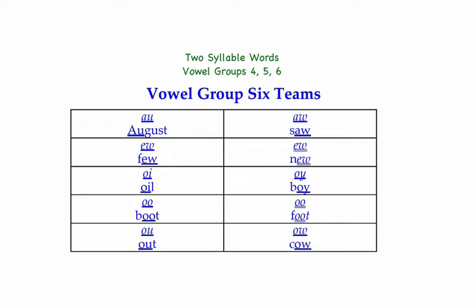This group of teams you have to memorize. A-U is 'aw' as in August. A-W is 'aw' as in Psalm. E-W with one line under it, the primary sound, is 'you' as in few. E-W with two lines under it represents the second sound, 'oo' as in new. O-I is 'oi' as in oil. O-Y is 'oi', same sound, as in boy.